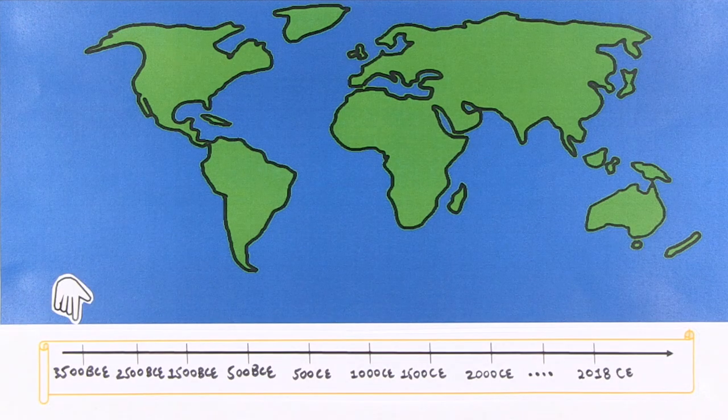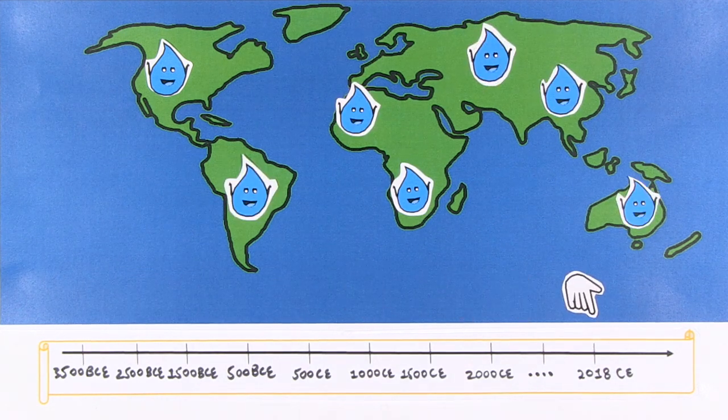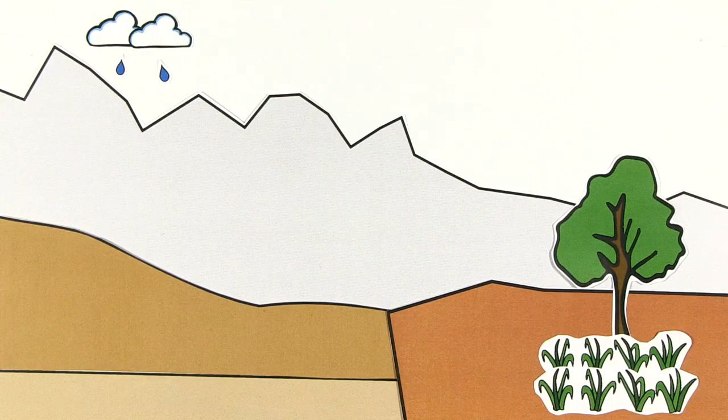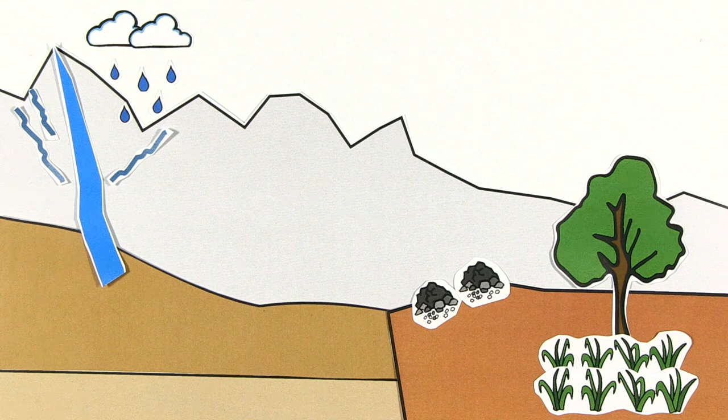Rainwater harvesting practices date back almost 5,000 years and are found all over the world. Rainwater harvesting is the collection and storage of rainwater in natural or constructed reservoirs.